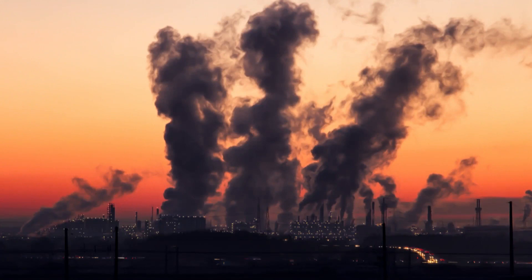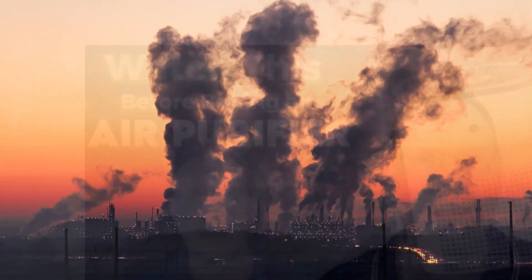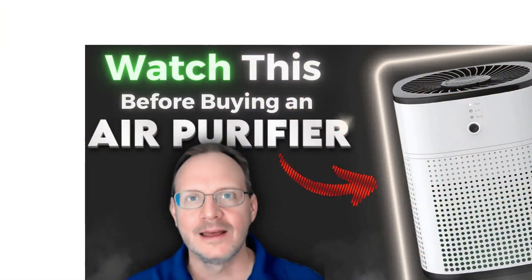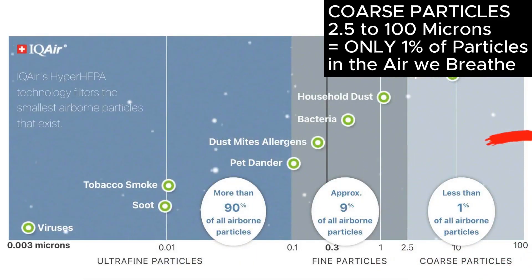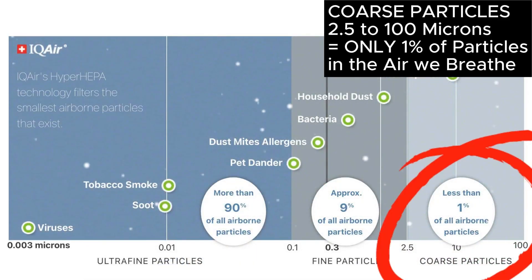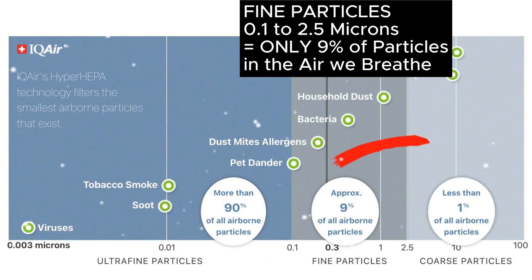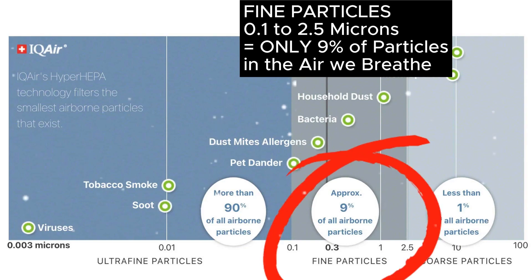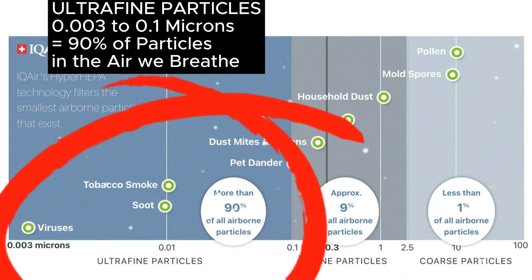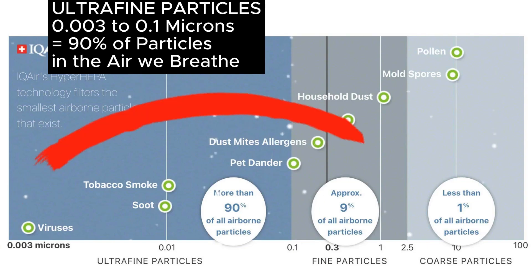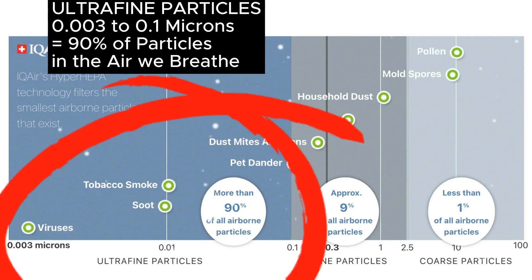PM10 is suspended coarse particulate matter, and they can be either solid or liquid. From the last video, there are three main types of particulate matter: coarse particles, which are 2.5 to 100 microns in diameter, and they make up only 1% of the air we breathe; fine particles, which are 0.1 to 2.5 microns, which make up 9% of all the particles in the air; and ultrafine particles, which are 0.003 microns to 0.1 microns, and they make up 90% of the particles in the air that we breathe.